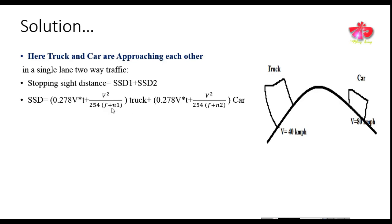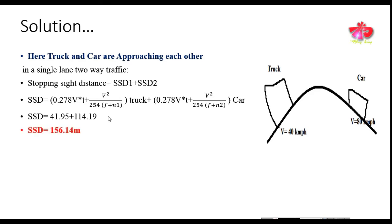Similarly, the stopping sight distance for the car is: SSD = 0.278·V·T + V² / (254·(F + N2)). Since the vehicles are approaching each other over the summit, the grade is added with friction in both cases. Solving both expressions and summing them, we get the total stopping sight distance as 156.14 meters.